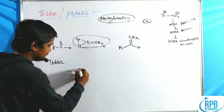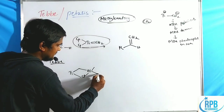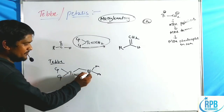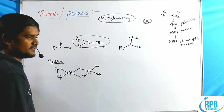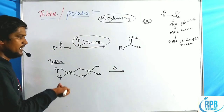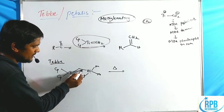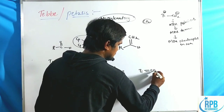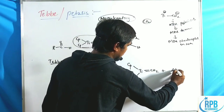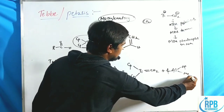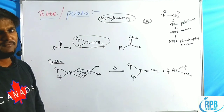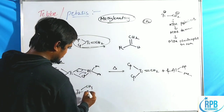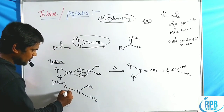In the Tebbe preparation, a Cp₂Ti–CH₃ and aluminum–Cl complex (Cp₂Ti(CH₃)–AlCl complex) is subjected to heating. Upon heating, elimination occurs, forming a Ti=CH₂ double bond along with Cp₂Ti=CH₂ and AlCl(CH₃)₂ byproducts. This is the Tebbe reagent preparation method.